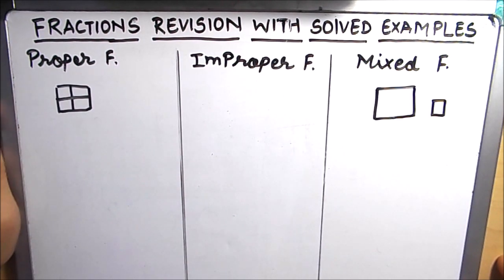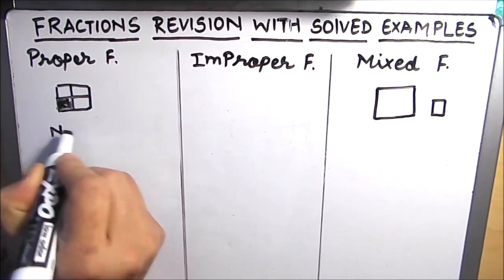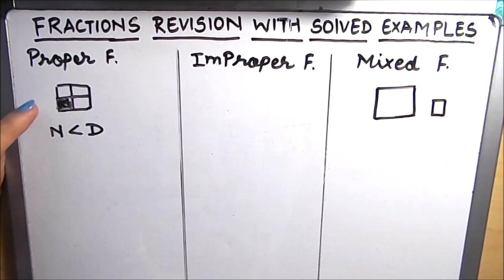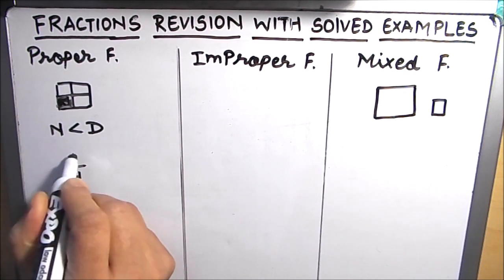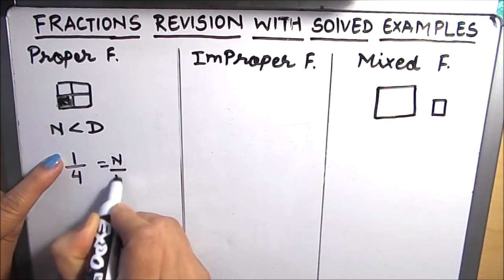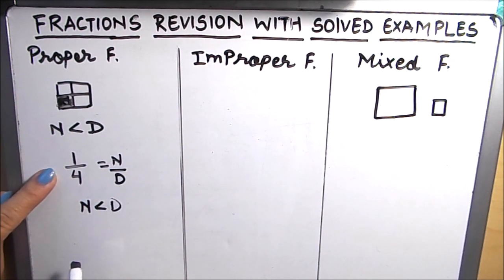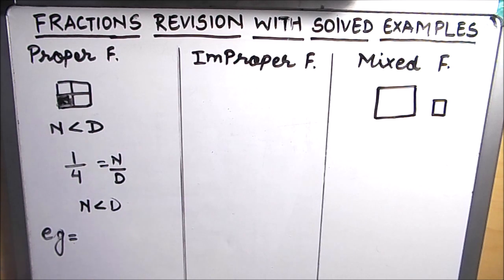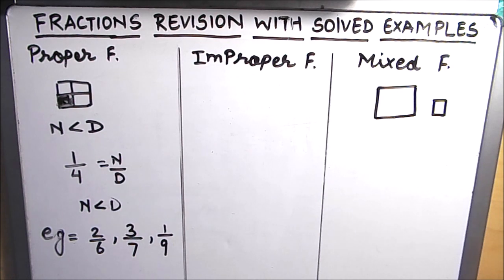The first one is proper fraction. Proper fractions are fractions where the numerator is less than the denominator. Here in the example, the fraction for the shaded part is 1 over 4. The numerator is 1 and the denominator is 4, so the numerator is less than the denominator — this is a proper fraction. A few more examples of proper fractions are 2 over 6, 3 over 7, 1 over 9, and so on.